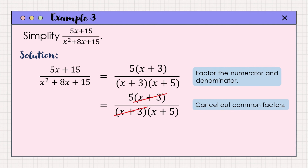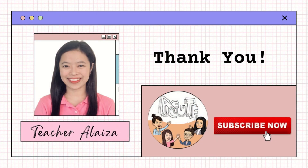The remaining factors give us 5 all over x plus 5. So the simplified form of the rational algebraic expression 5x plus 15 all over x squared plus 8x plus 15 is equal to 5 over x plus 5. That ends our lesson on simplifying rational algebraic expressions. Good job, Grade 8 learners! Thank you for your time and effort. I hope you have learned a lot. Again, this is Teacher Eliza May Kunanan, your Grade 8 Mathematics teacher. Have a good day and God bless!